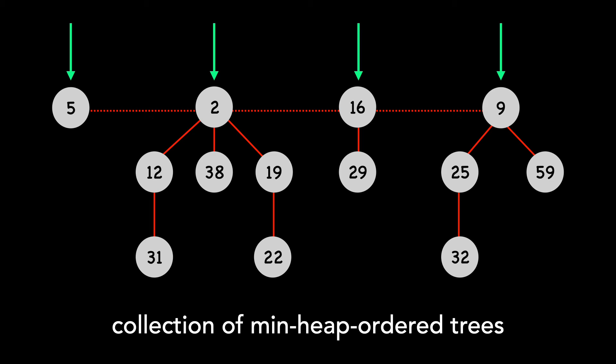For example, if we look at node 31, its key is greater than or equal to the key of its parent, 12. You'll also notice a Fibonacci heap isn't binary in nature. The number of children can vary. In our example, some nodes have zero children, while node 2 has three.